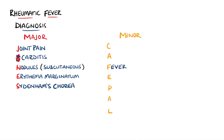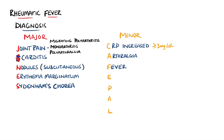The minor criteria are given by the CAFFEY-PAL portion. C stands for an increased CRP above 3 mg per deciliter. A is for arthralgia, which may seem strange as we already mentioned joint involvement. The reason is that migrating polyarthritis is considered a major criterion in all populations, while monoarthritis and polyarthralgia are only included as major criteria in high-risk populations; otherwise, they are considered as minor criteria.